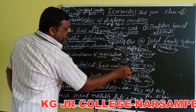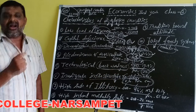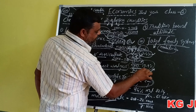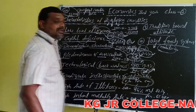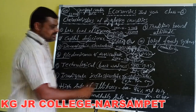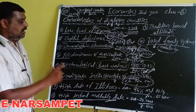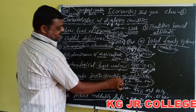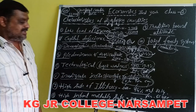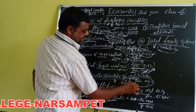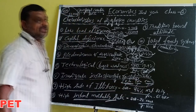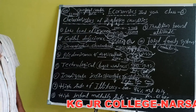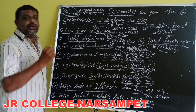On technological backwardness: the main reason is low investment in research and development and technology. Japan invests 3% of national income, while India invests just 0.82%. Regarding inadequate infrastructure: electricity, transport, and communication are slowly developing, causing backwardness in agriculture, industrial, and service sectors.